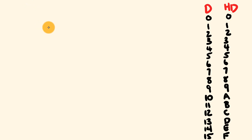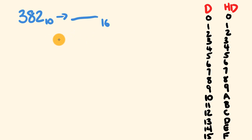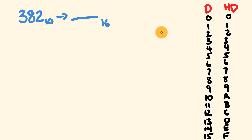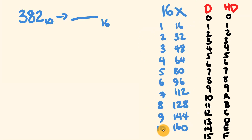Let's go through and look at how to convert a decimal to hexadecimal. Say we want to convert 382 in base 10 to base 16. The method involves repeatedly dividing by 16. I'll use a small 16 times table on the side to help us out.